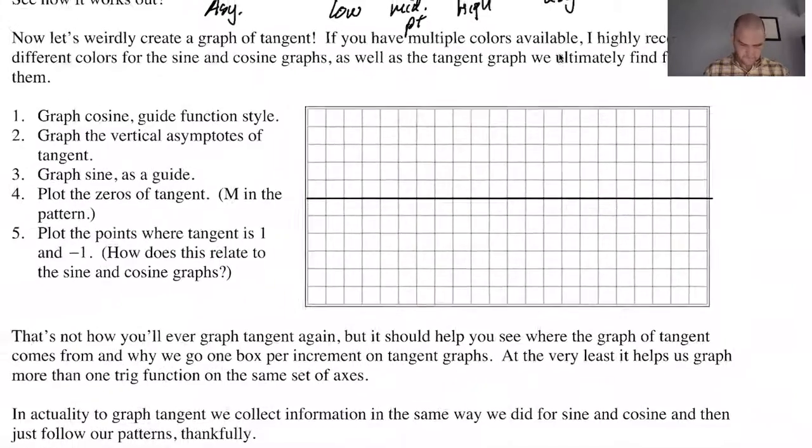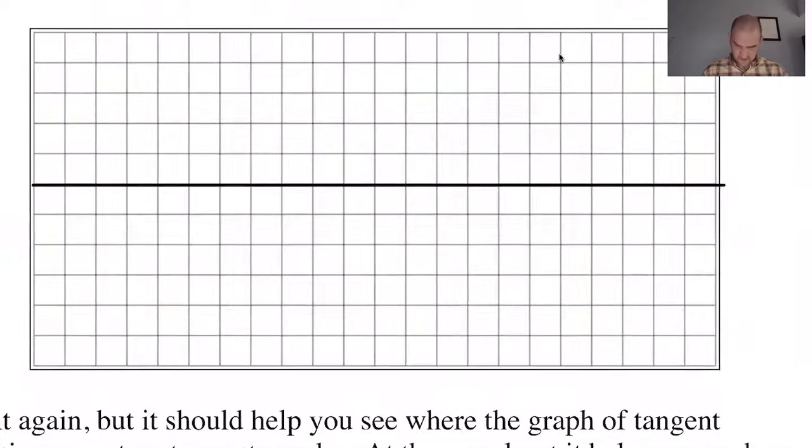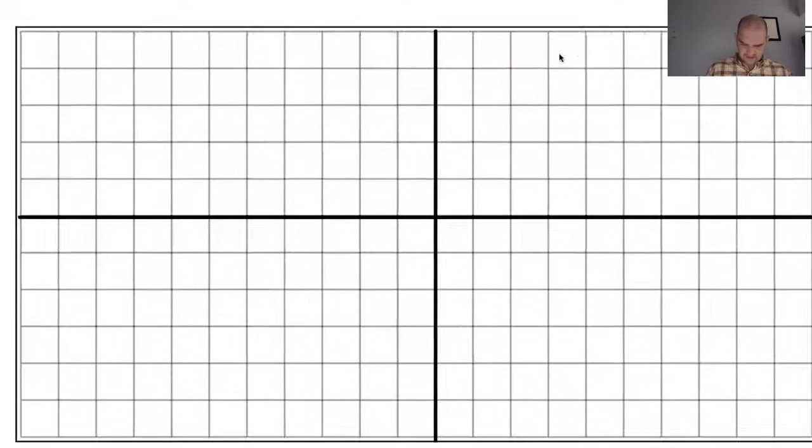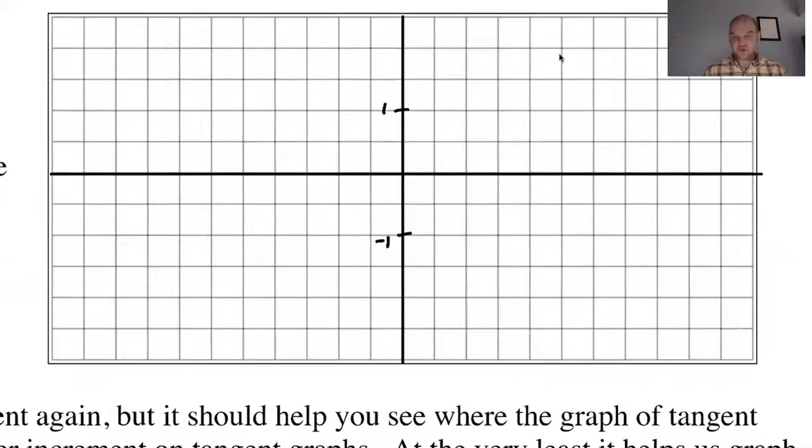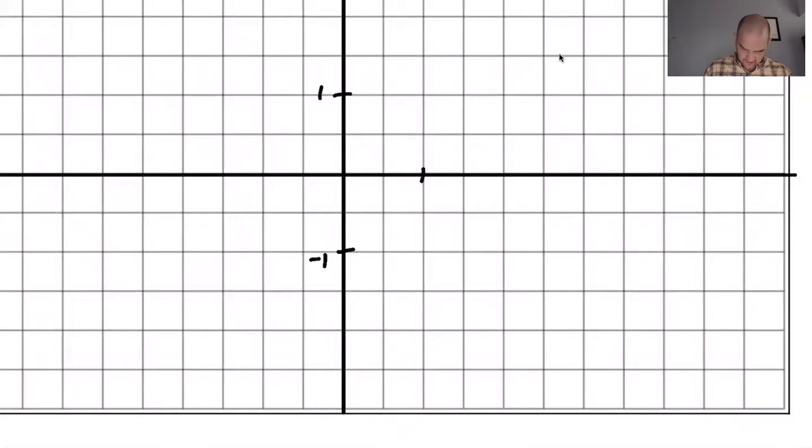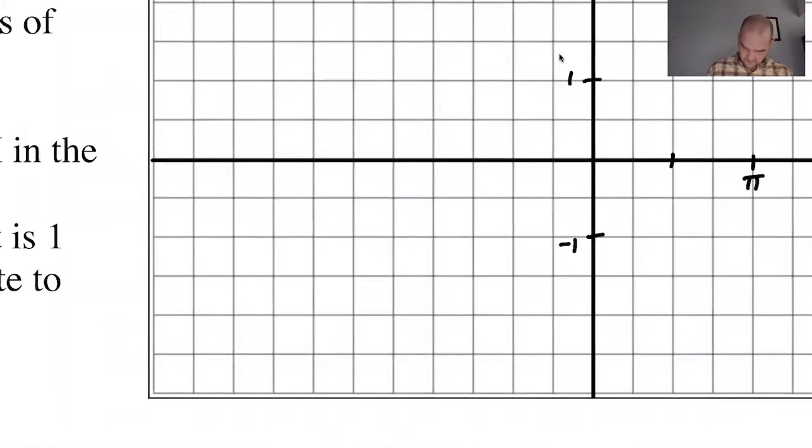I'm going to put in the y-axis. So we get that. And then I'm going to say this is one and this is negative one. So two boxes per increment. So this will be pi over two and then pi, three pi over two, two pi, and then another tick mark. And then just make sure you're going two boxes, negative pi over two, negative pi, negative three pi over two, negative two pi, and then you get one more.